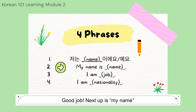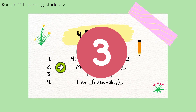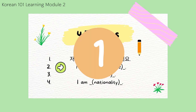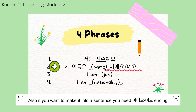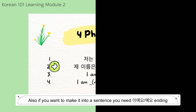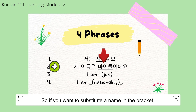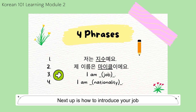Next up is 'my name.' 3 seconds or pause the video. That's right! 'My name' is 제 이름은. And if you want to make it into a sentence, you need the 이에요 or 예요 ending. So if you substitute a name in the bracket, it goes 제 이름은 마이클이에요. Next up is how to introduce your job.